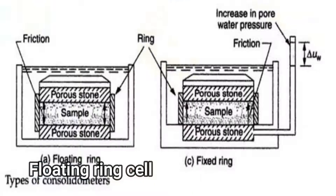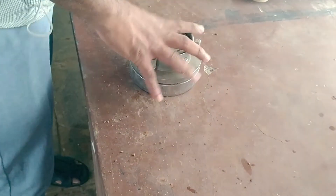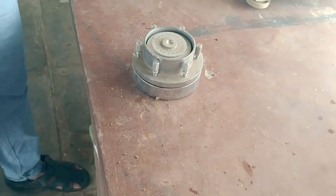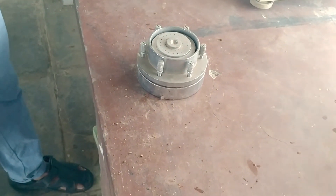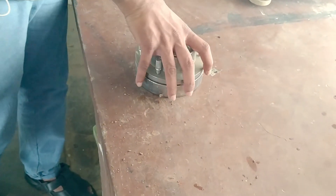In the floating ring cell, both the top and bottom porous stones are free to move, and loading is applied. In the fixed type, only the top porous stone can move — that is the difference between the floating and fixed types. This here is a completely fixed ring cell. Now we'll be moving on to the loading device.